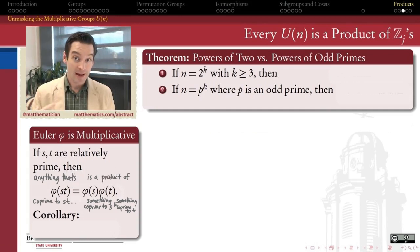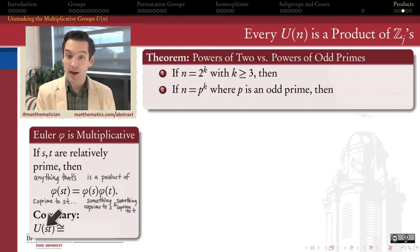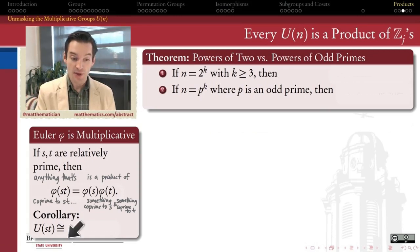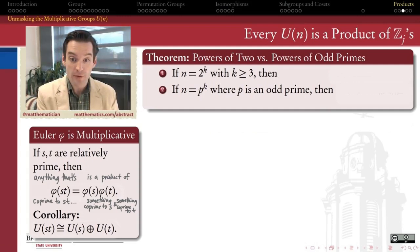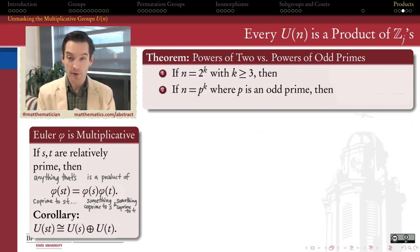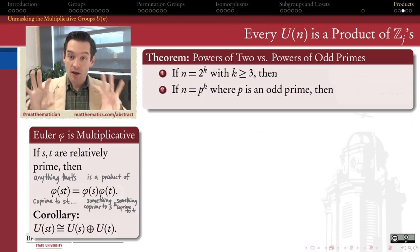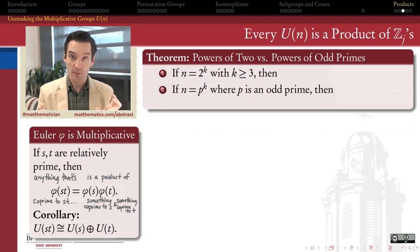What we'll be able to get out of that as a corollary is that the multiplicative group of units mod st, when s and t are relatively prime, is actually going to be isomorphic to the direct product U(s) × U(t). This gives us a powerful way to take a multiplicative group of units mod something and break it apart into a direct product of smaller multiplicative groups where the modulus is smaller than it originally was.